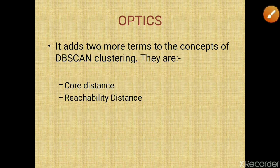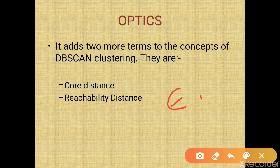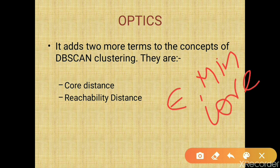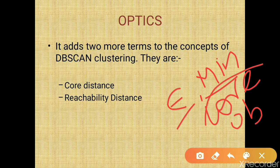In DBSCAN the parameters we discussed in our previous video are epsilon, minimum points, and core object. Epsilon is the maximum radius, minimum points is the number of points that we have to specify in order to cluster, and the core object is the object which satisfies these two criteria. Those were the parameters in the case of DBSCAN.